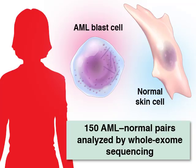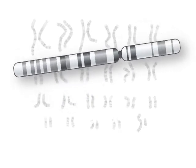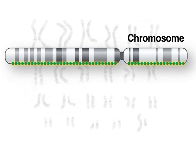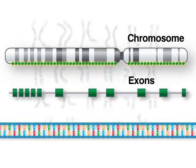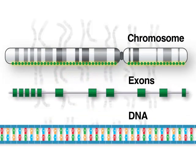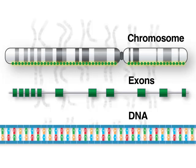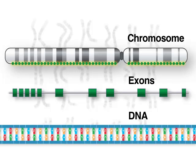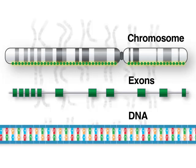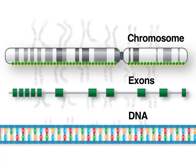For the remaining 150 samples, the coding sequences of all known genes, known as exomes, were sequenced. This strategy is more sensitive than whole genome sequencing, but it yields sequence for only about 1% of the genome. It generally does not detect mutations in the rest of the genome and is less useful for detecting structural alterations.